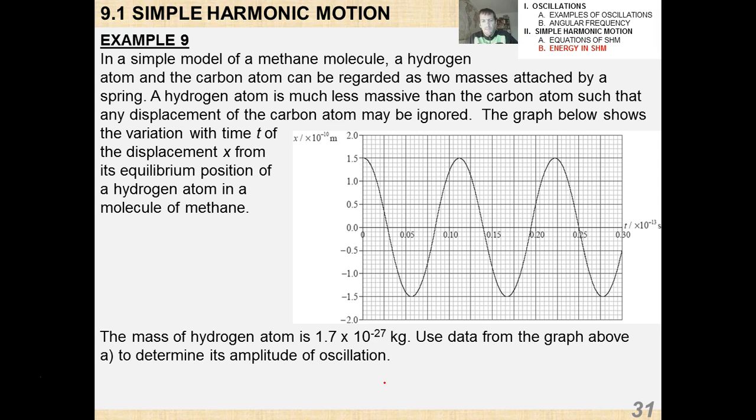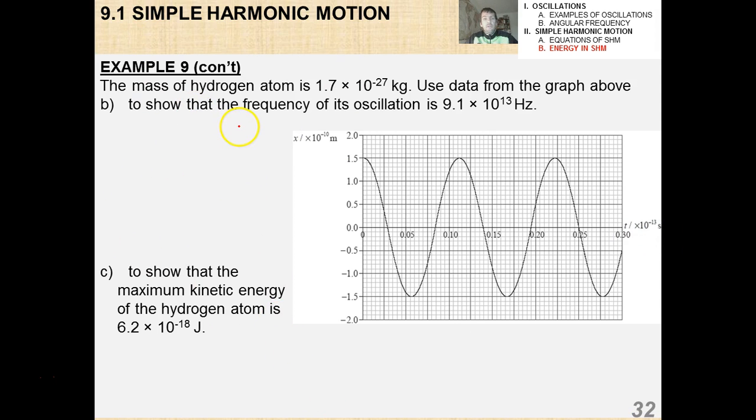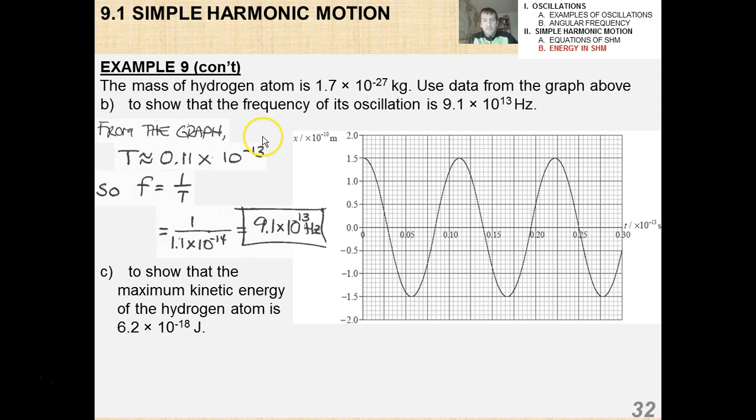It turns out that the hydrogen is much less massive than the carbon. You should know that, even if you're not taking chemistry, such that any displacement of the carbon atom can be ignored. The graph shows the variation with time t of the displacement x from its equilibrium position. Okay, the mass of a hydrogen atom is 1.7 times 10 to the minus 27 kilograms. Using data from the graph above, determine the amplitude of its oscillation. Well, this is very simple. All you do is you just read the maximum value on the y-axis. And I got that it's clearly 1.5 times 10 to the minus 10 meters. Don't forget that you have this power of 10 associated there with your units. That's really important. All right, show that the frequency of its oscillation is 9.1 times 10 to the 13 hertz. Well, all you do here is you need to figure out what the period is from the graph. And the frequency is 1 over that. So you see, the questions that we ask you are really fairly basic. You're not going to have to derive any crazy stuff.